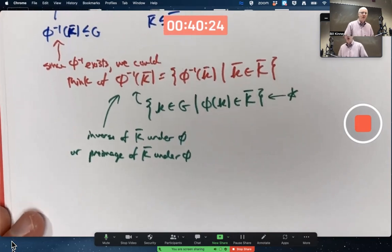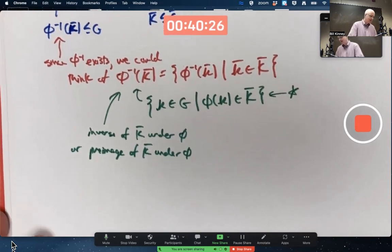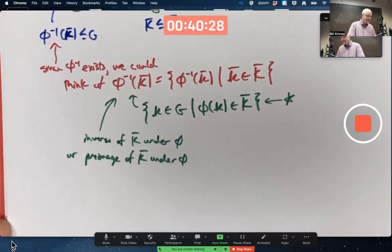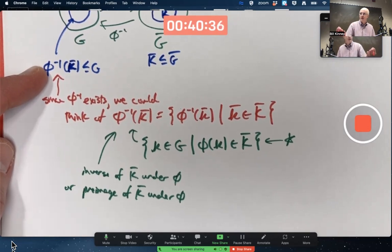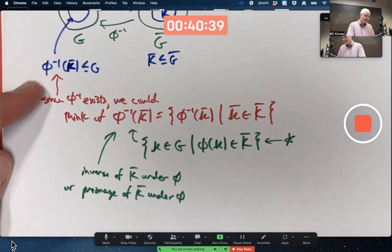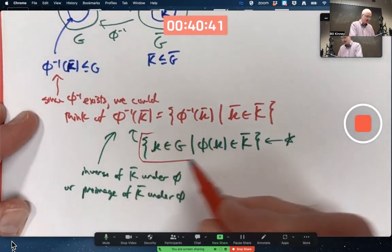But how do you show that this is a subgroup of G like this claims? We got to use a subgroup test. Let's try the one step subgroup test though there's the zero step of showing the identities in here. I'm going to use this form of the definition. Is the identity an element that gets mapped into K bar?